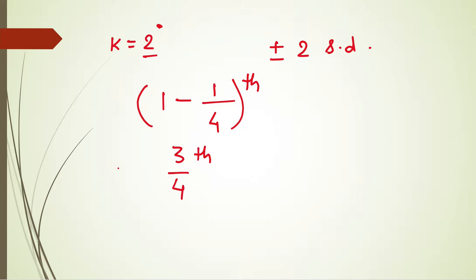At least, that is more than 3 fourths of the data will lie within two standard deviations plus minus, and this 3 fourths is equivalent to saying 75%. At least 75% of the data will lie within two standard deviations from the mean.